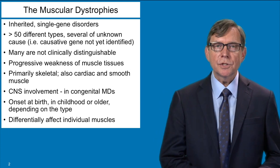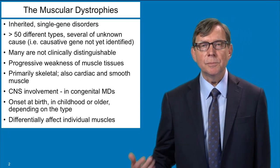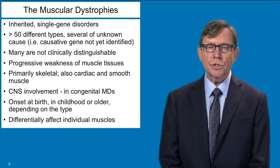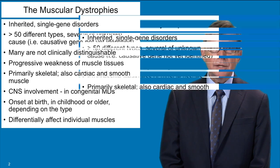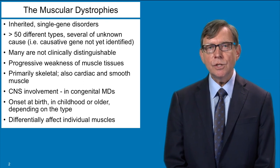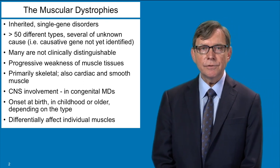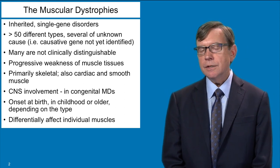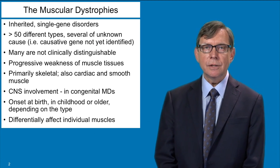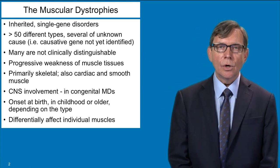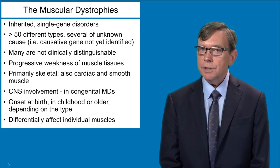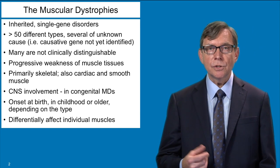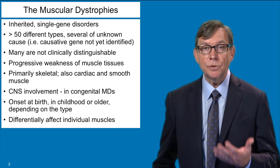Let's start off with an introduction. As you probably already know from other lectures, the muscular dystrophies represent a wide variety of different genetic disorders. These are inherited disorders, and there are many different types of muscular dystrophy, each one caused by a mutation in a different gene. A difficulty in trying to diagnose muscular dystrophy is that many of the different versions of this disease are not distinguishable at a clinical level. So it's important to do the genetics and try to identify which gene is mutated in an individual patient.